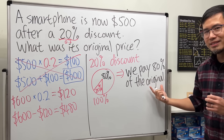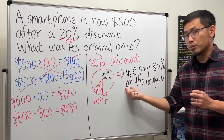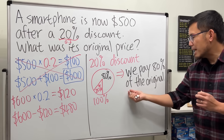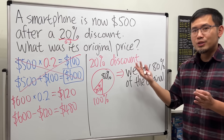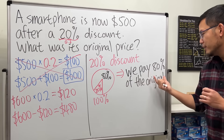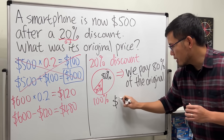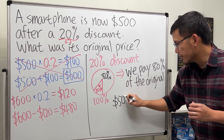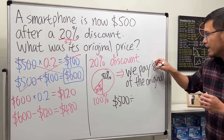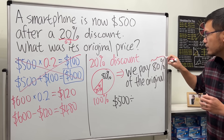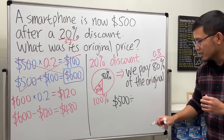80% of the original equals the sale price, which is $500. So how can we figure out the original? Well, 80% times the original gives us 500. If I want to figure out the original, just go ahead and do 500 divided by 80% — which is 0.8 by moving the decimal twice to the left — because we have to work backwards.